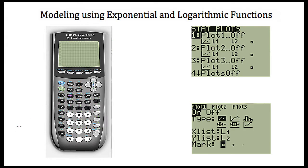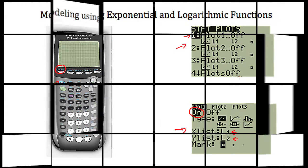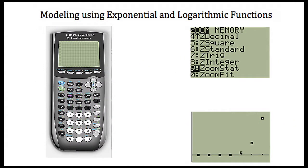Your next step is to create the scatter plot. Once your data is in your modeling software, hit the second button and then hit the Y= key because we want the stat plot. You'll get a screen — select plot number one and hit enter. Turn this plot on, and make sure that your x-axis is the first list and your y-axis is the second list, otherwise we won't graph the way we want to. Then hit the zoom key and select zoom stat to get your scatter plot.